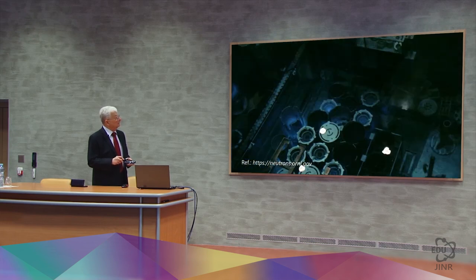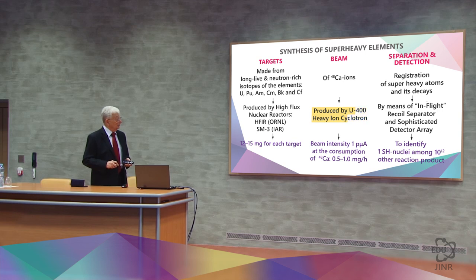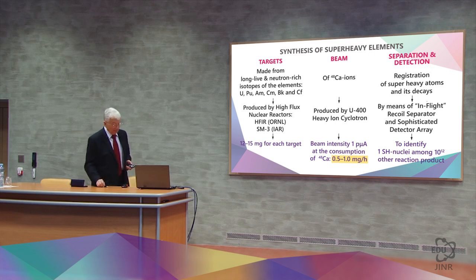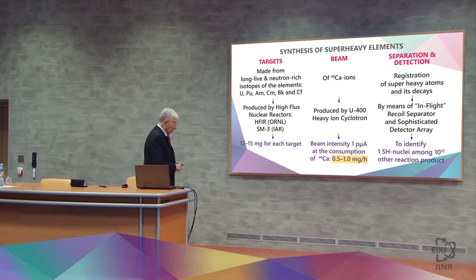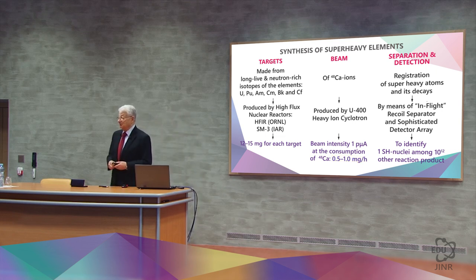In order to use calcium-48 ions, the accelerator setup was significantly redesigned. A beam of one microampere per particle was achieved, which means 6 times 10 to the power of 12 particles per second at a calcium consumption rate of 0.5 to 1 mg per hour. The efficiency of using neutral calcium is approximately 1%.